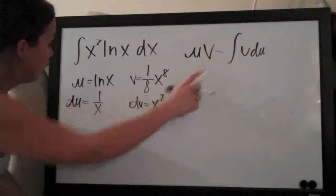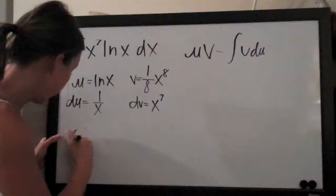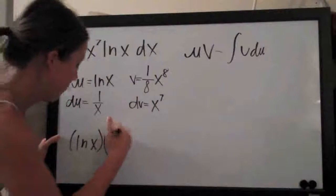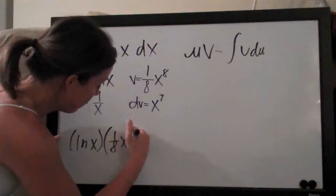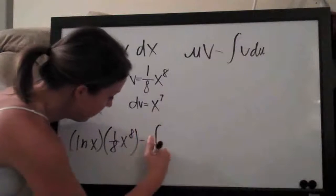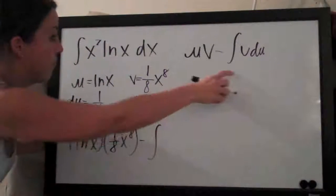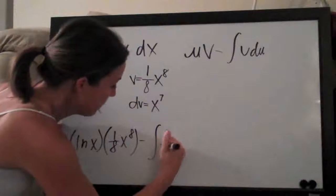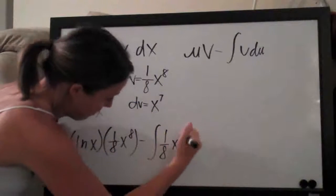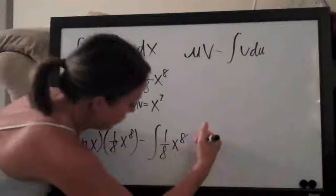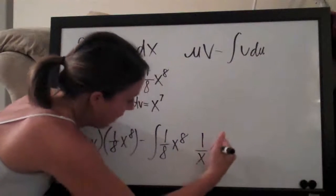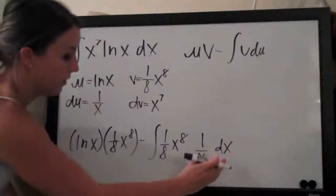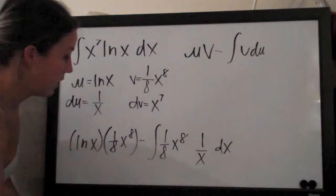So you can see we have u times v. Let's go ahead and write this out here. We have ln of x times v which is one eighth x to the eighth minus the integral of v du. So we have one eighth x to the eighth times du which is one over x, and then we have to add dx here because it accompanies the integral as part of integral notation.